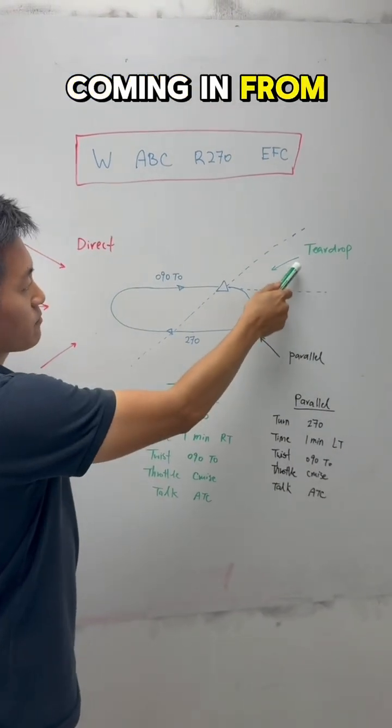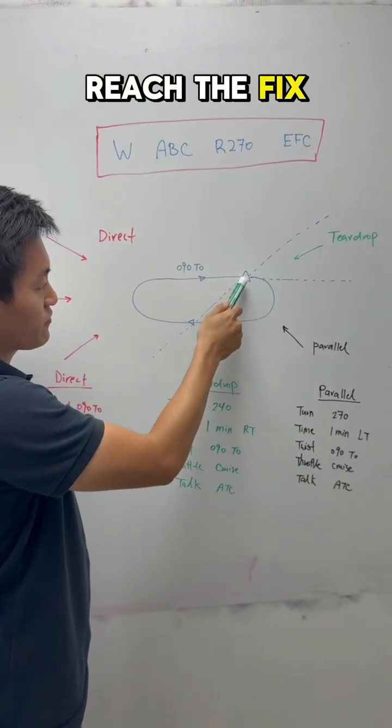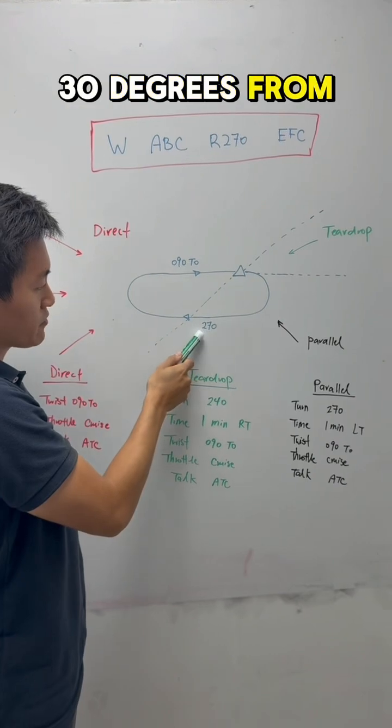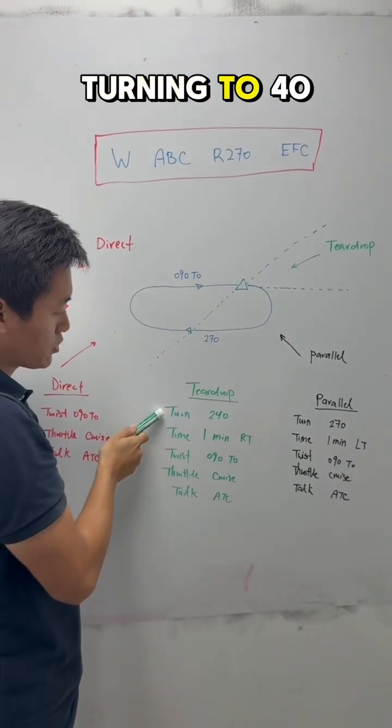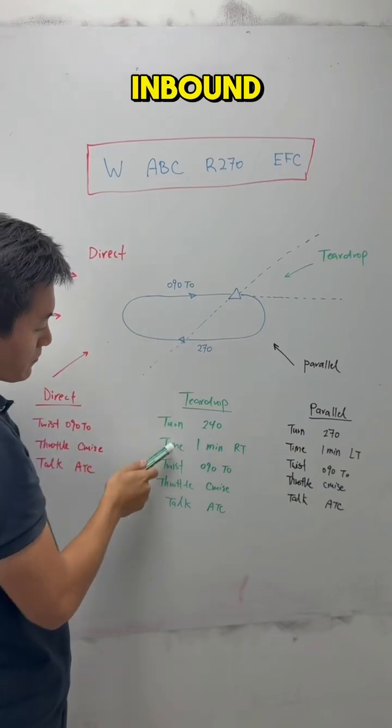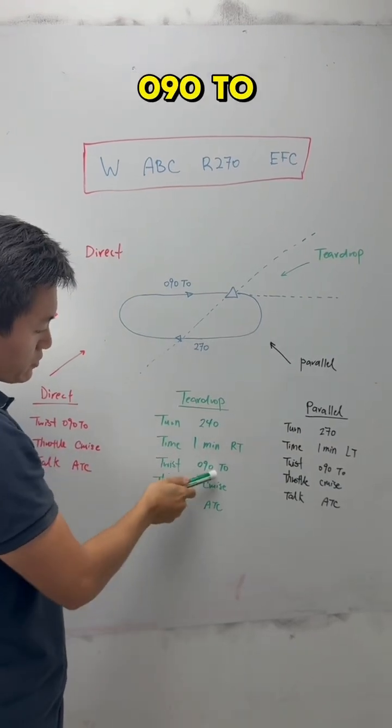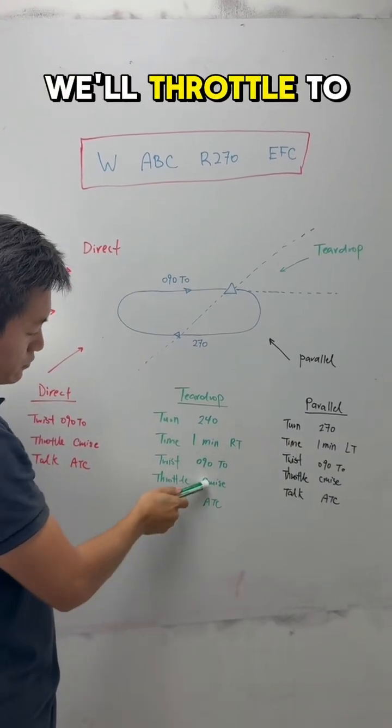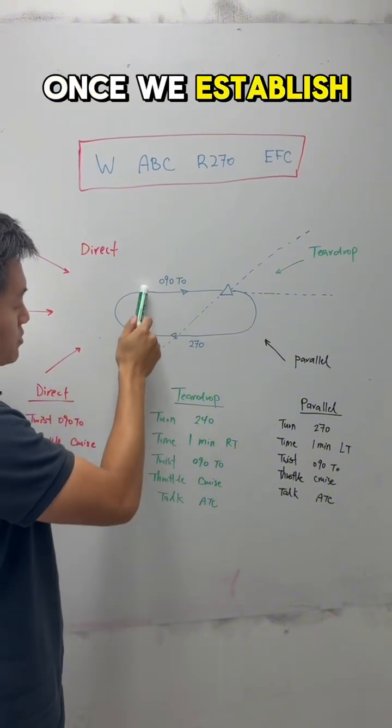So teardrop entry, we'll come in from the 70 degrees section. When we reach the fix, we'll fly heading 30 degrees from the outbound. So in this case, we'll be turning 240. After one minute, we'll make a right turn, twist out from the inbound, and we'll twist the CDI to 090. After that, we'll follow the procedures and then talk to the ATC once we establish on that inbound.